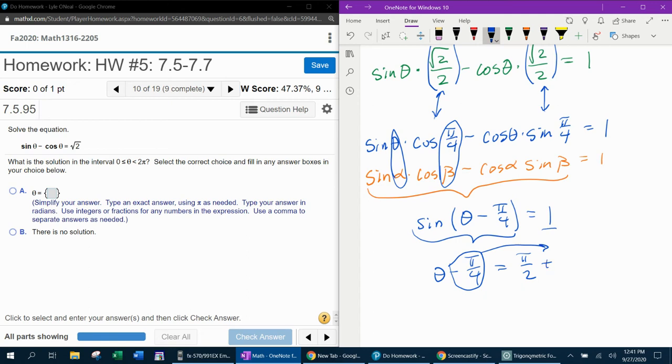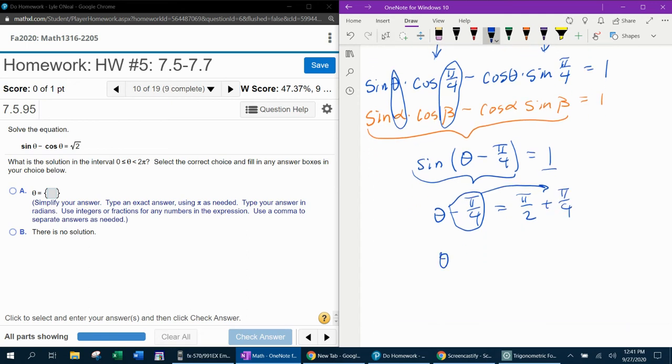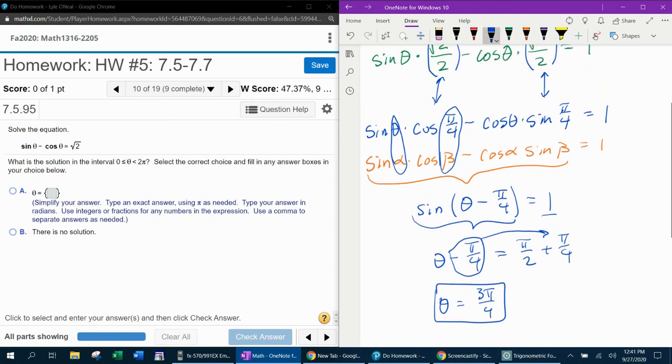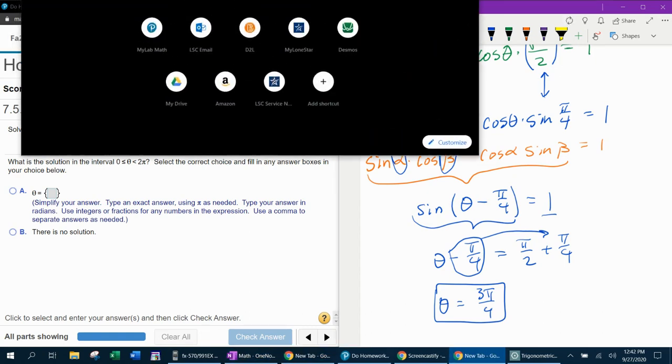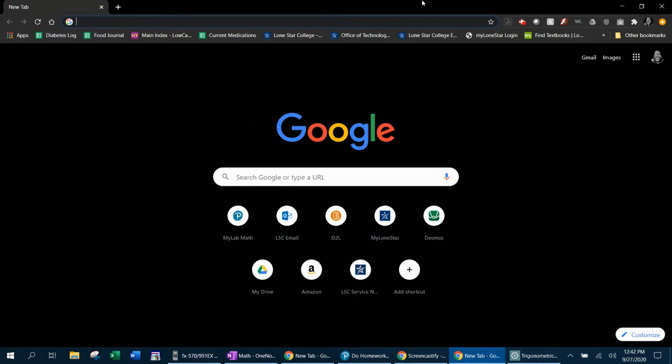Moving this over makes that a plus pi over 4. And then if I get a common denominator and add that, that's going to be 2 fourths plus 1 fourth. That's going to be 3 fourths. 3 pi over 4 is my answer. And then what we're going to do to check that is we're going to go and pull up a Desmos window. And Desmos.